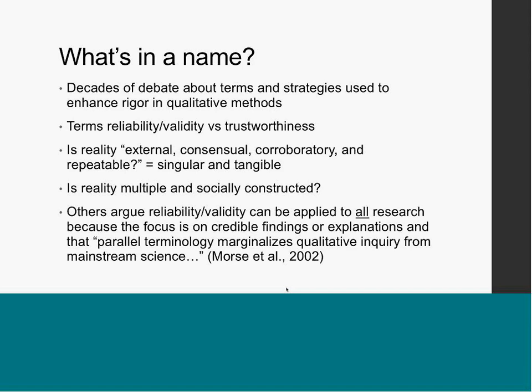For example, if you're looking at a phenomenon like the experiences of rural communities dealing with higher food insecurity and being able to access fresh fruits and vegetables — is that something singular and tangible, or is it multiple different ways of experiencing that situation? And is that socially constructed? These are some of the questions to consider.